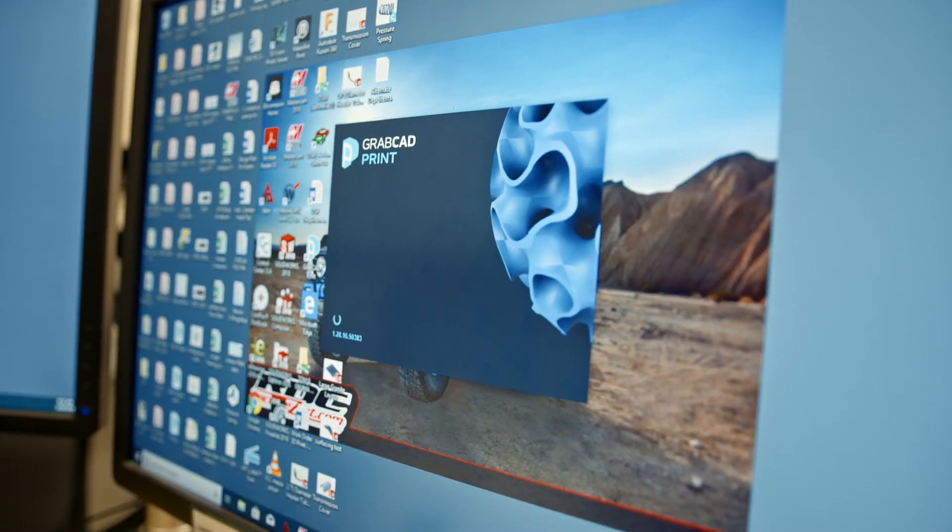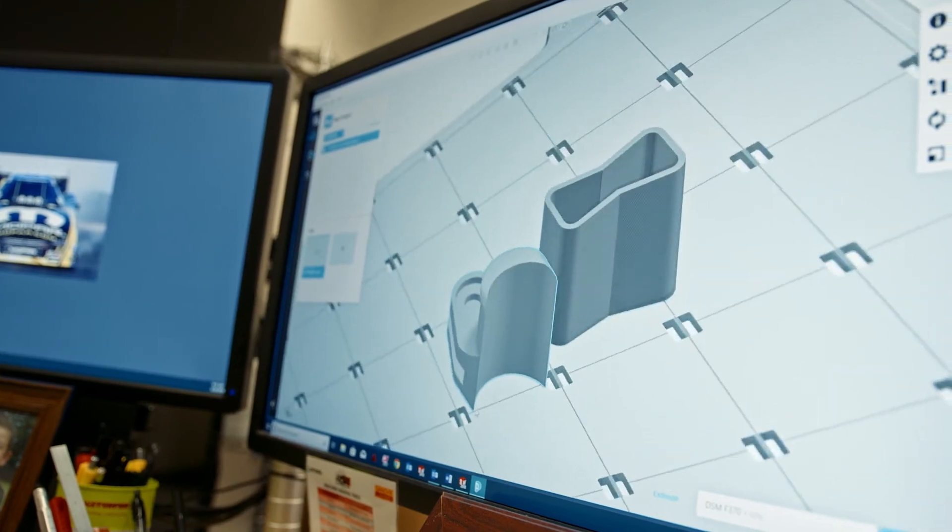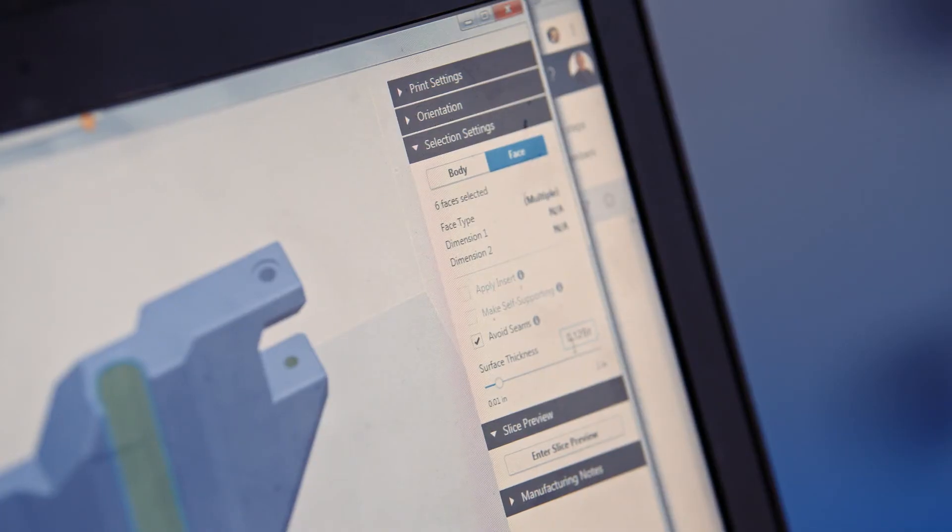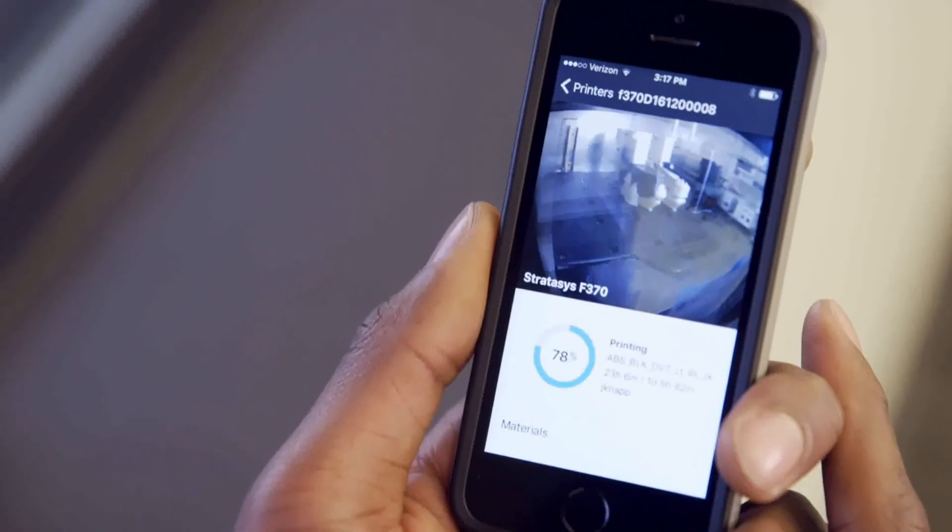GrabCAD Print Software speaks to the entire family of Stratasys 3D printers. It eases the workflow from CAD design to data preparation to print, and it also allows you to watch prints before they've begun printing, while they're printing, and to see whether they've finished or not.